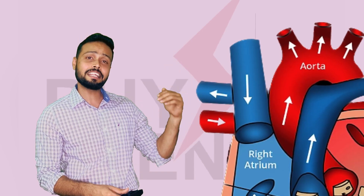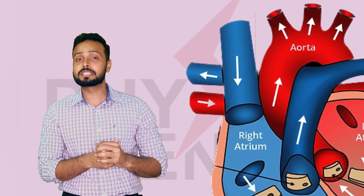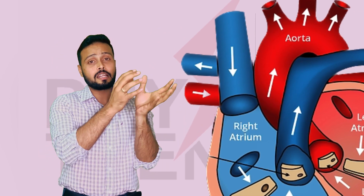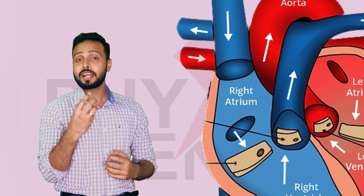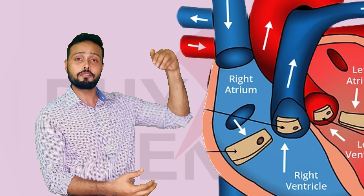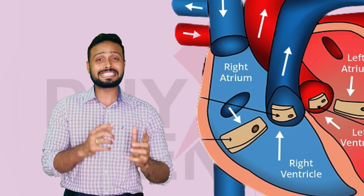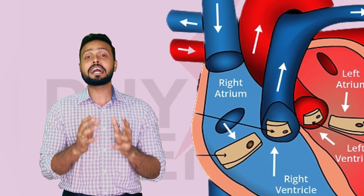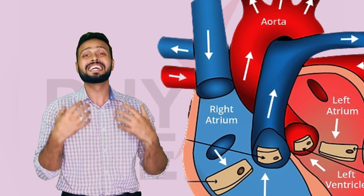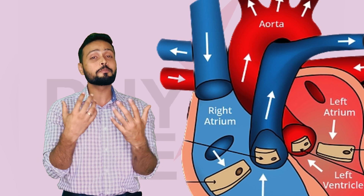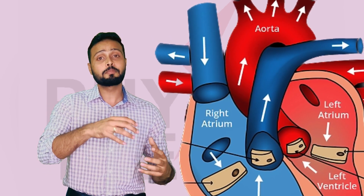We all know that from the superior and inferior vena cava, the blood from the system is directed towards the heart. From there it enters the right atrium, and with the help of the tricuspid valve it enters the right ventricle. From here it is taken up by the pulmonary artery — this is the only artery in our body which carries unoxygenated or unpurified blood. The pulmonary artery carries all the unoxygenated blood to the lungs.